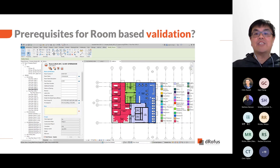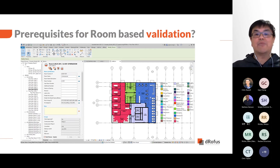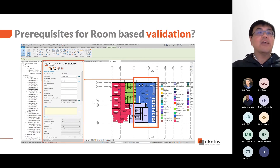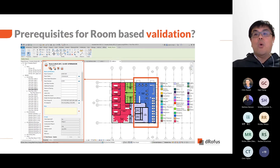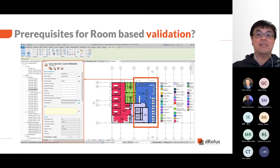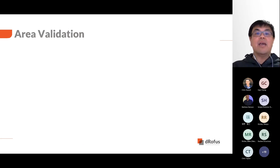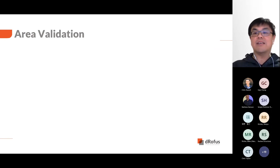To carry out the room-based validation, your room should be linked and the room area in the model synchronized with the dRofus design area attribute. You can use the dRofus panel in either ARCHICAD or Revit to make this check. When you select a room, if the dRofus panel shows the detail of the room, then the dRofus room is connected. Otherwise, you will be prompted to link the Revit room to dRofus. You can use the Revit room for the design areas. Area validation is identifying differences between brief areas and designed areas.